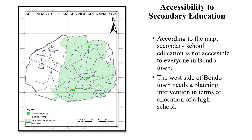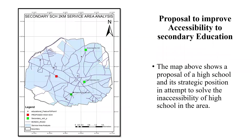I also conducted the analysis for secondary schools. The planning standard for secondary schools is similarly 2 kilometers, the same as primary schools. As seen on the map, the left side has a significant white area, indicating that this area needs an additional secondary school. I proposed adding one there, and the results show improved coverage. This would be an interesting proposal to help solve the accessibility gap.